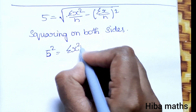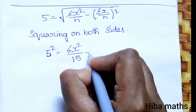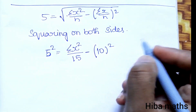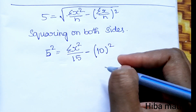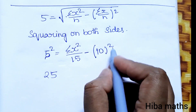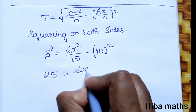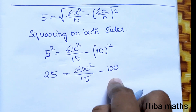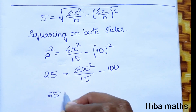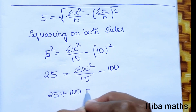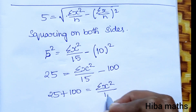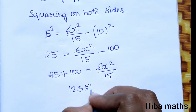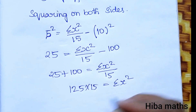So we have: summation of x² divided by n equals standard deviation squared plus mean squared. With n equal to 15, mean equal to 10: 5 squared is 25 minus 10 squared equals summation of x² by 15, minus 100. Therefore 25 plus 100 equals summation of x² divided by 15. So 125 into 15 equals summation of x², giving summation of x² equal to 1875.